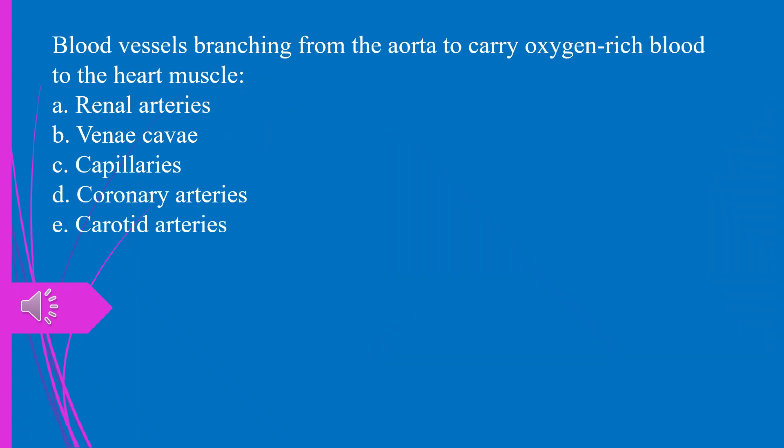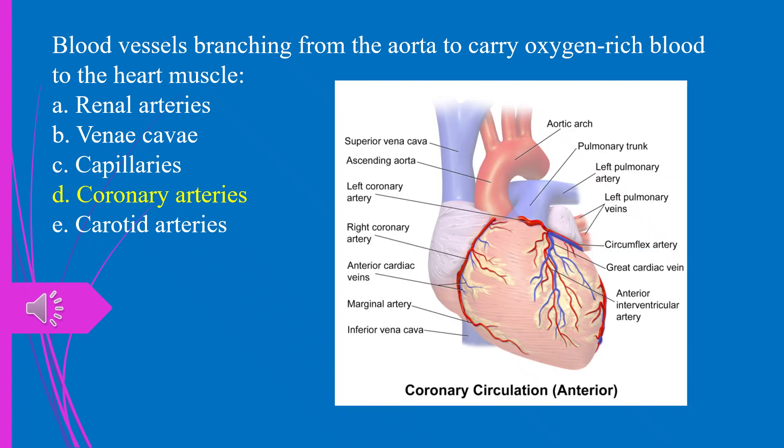Blood vessels branching from the aorta to carry oxygen-rich blood to the heart muscle. A. Renal arteries. B. Venae cavae. C. Capillaries. D. Coronary arteries. E. Carotid arteries. The answer is D. Coronary arteries.